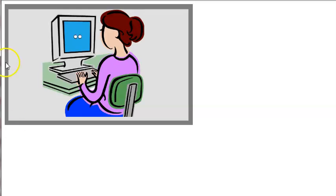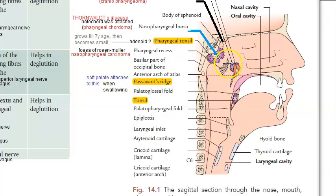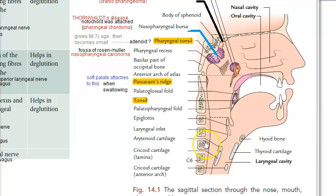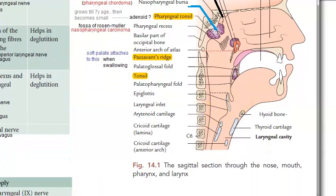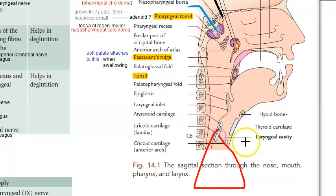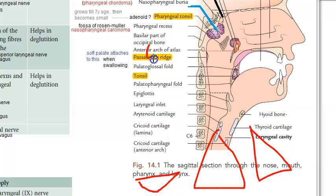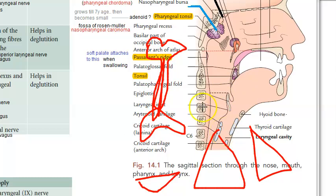If there is a carcinoma in the fossa of Rosenmüller, there can also be neck pain and stiffness, because of retropharyngeal spread. Finally, because of distant spread, it can even affect the lung, the liver, and the bone — distant metastasis.